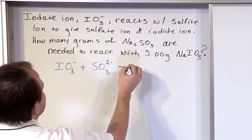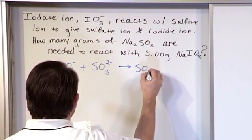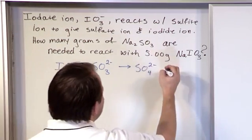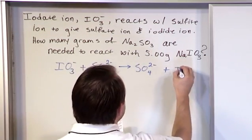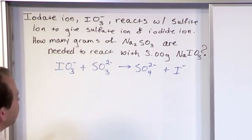And it yields or reacts together to give a sulfate ion, which you can look in your book and see that's SO4 with a charge of negative two, and an iodide ion, which is just iodine with an extra electron on there, so it has a negative charge. And this is basically the reaction.